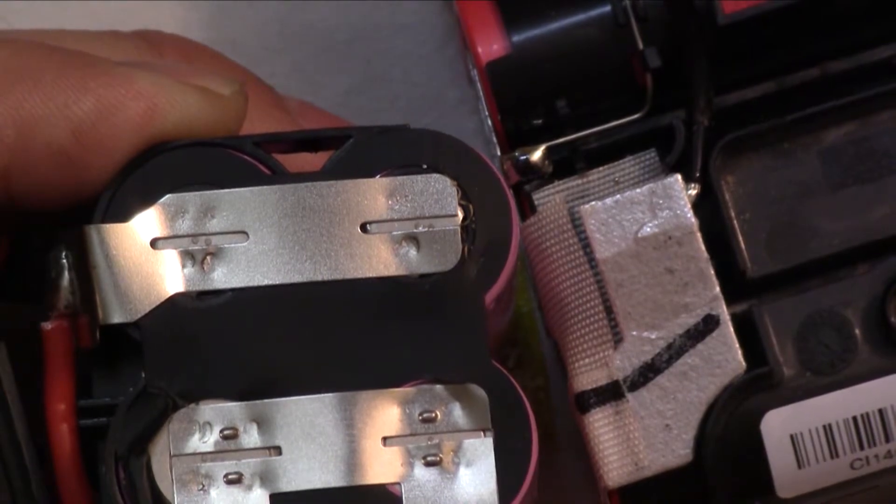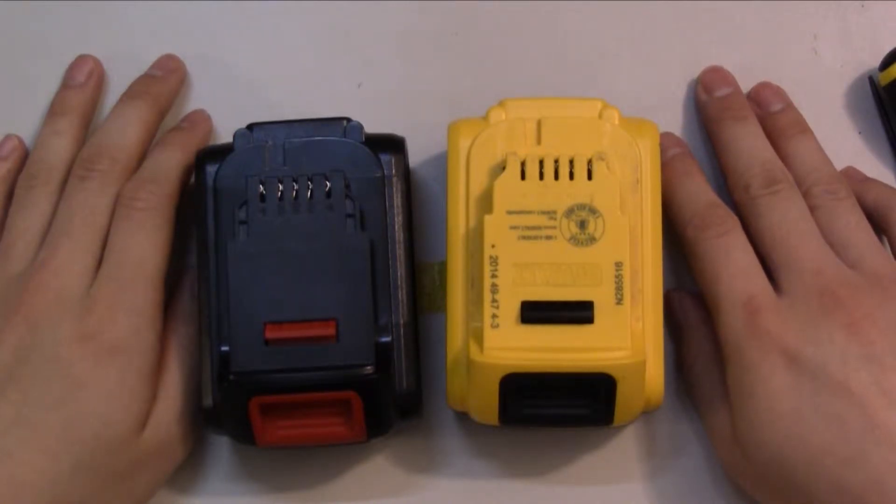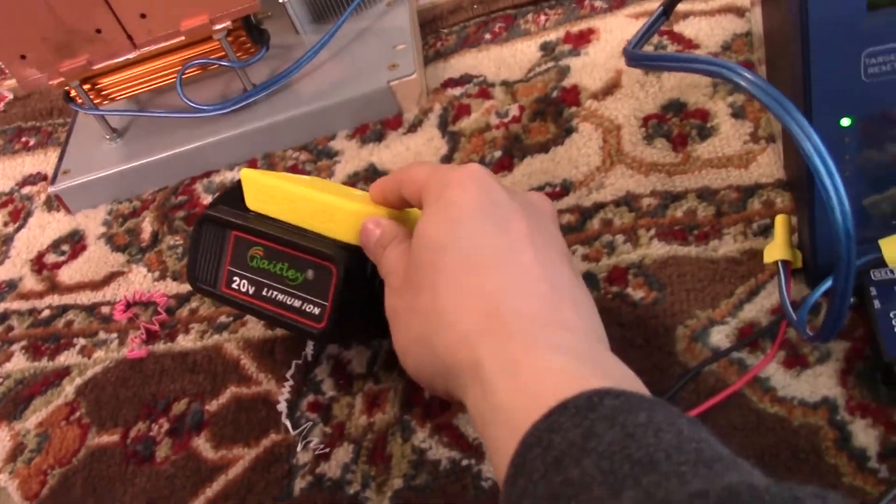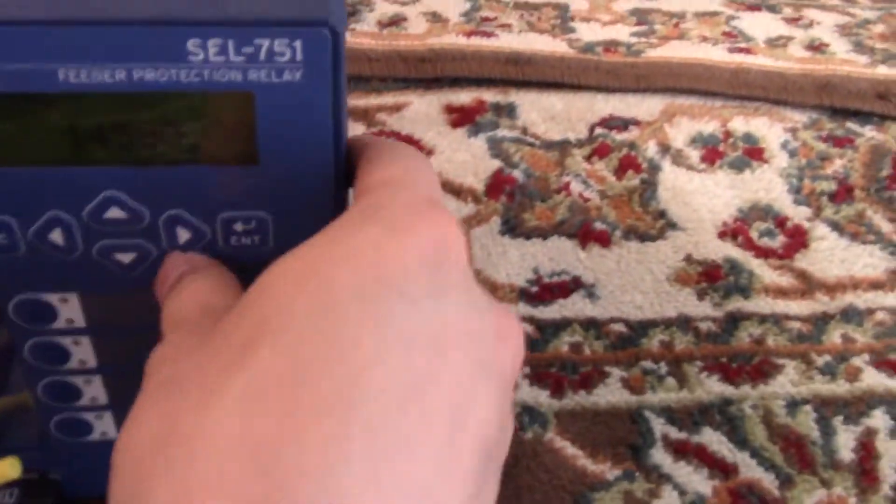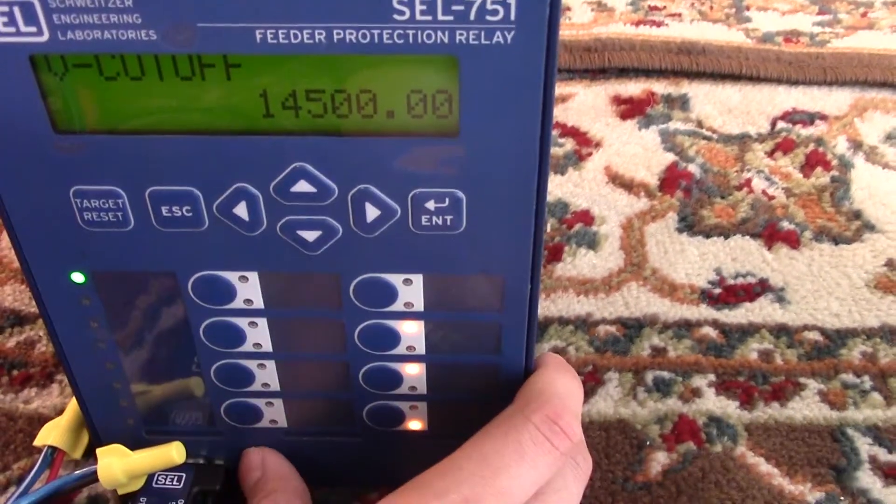So next step, I'll be testing the capacity myself and see how close it is to 6 amp hour. I have connected the battery here, the knock-off DeWalt battery, and then I set voltage cutoff to 14.5 volts. Let the test start.